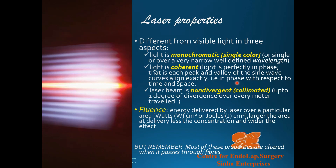Properties of laser versus visible light: Number one, laser is monochromatic — a single color, single well-defined wavelength — while natural light has the whole spectrum. Number two, laser is coherent — light is perfectly in phase, with each peak and trough matching in time and space. Number three, the laser beam is non-divergent or highly collimated, with only one degree of divergence per meter of travel — a very narrow focused beam, unlike natural light which spreads everywhere.